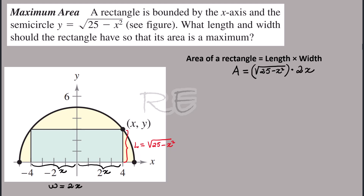So the length times the width will be the square root of 25 minus x squared times 2x, which is preferably written as 2x times (25 minus x squared) to the one-half, to facilitate the differentiation.